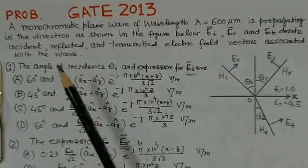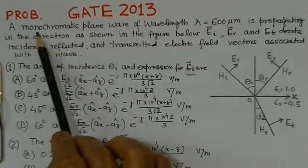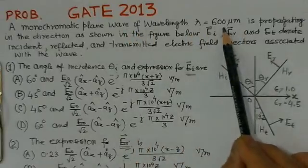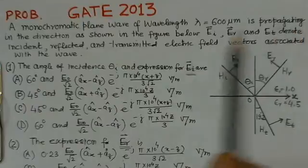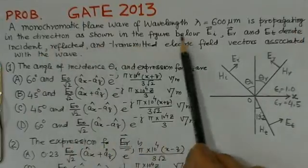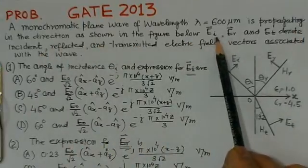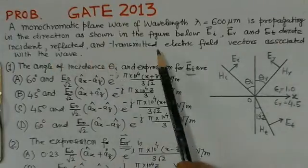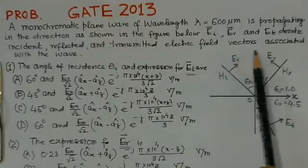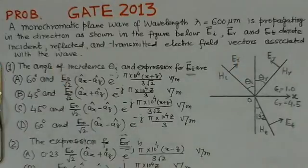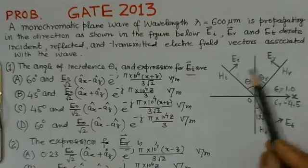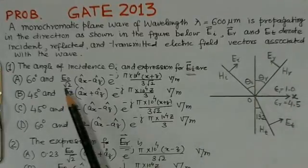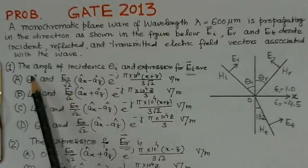Now we will read out the problem. A monochromatic plane wave of wavelength λ = 600 micrometers is propagating in the direction as shown in the figure below. E_I, E_R and E_T denote the incident, reflected and transmitted electric field vectors associated with the wave. The corresponding figure is given. We will see about it.